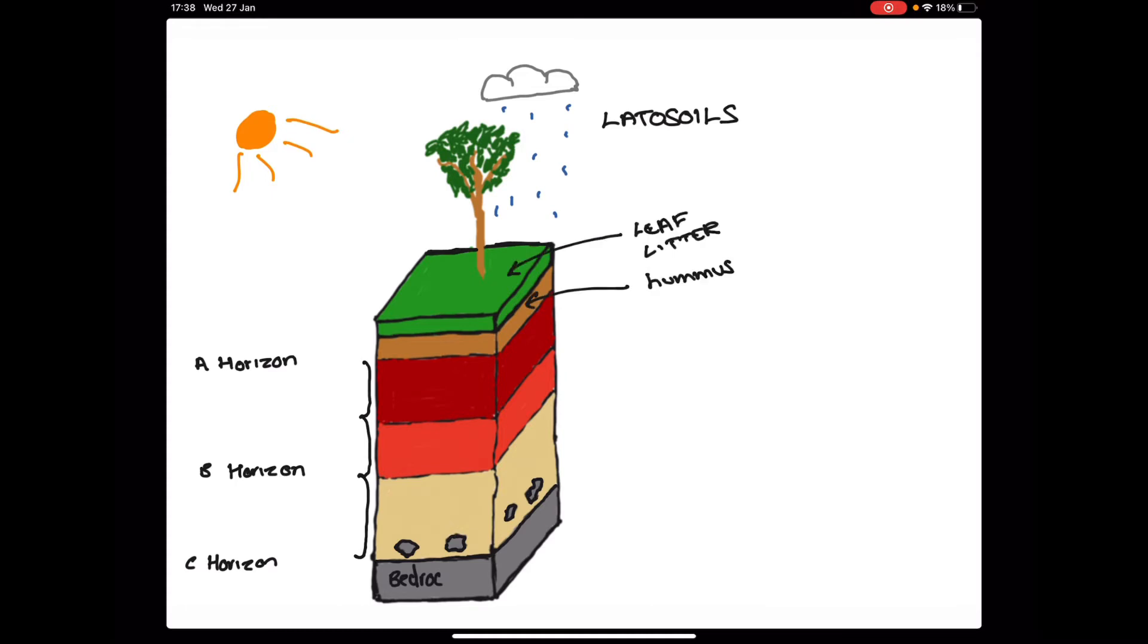The leaf litter contains a range of organic material including fallen leaves and dead animals. In the tropical rainforest, leaves fall from the trees all year because of its wet climate. As the leaves and other organic matter are broken down by bacteria, they form a layer of decomposed organic matter called humus. It is from the humus layer that many plants and trees obtain their minerals and nutrients.